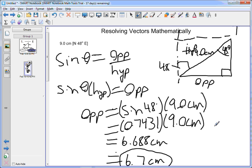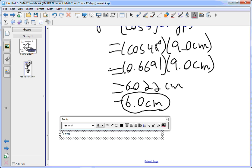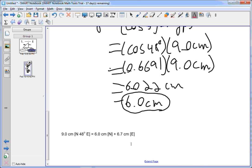And that of course would be in the north direction. So we can say that 9.0 centimeters north 48 degrees east equals 6.0 centimeters north plus 6.7 centimeters east, and that being our final answer.